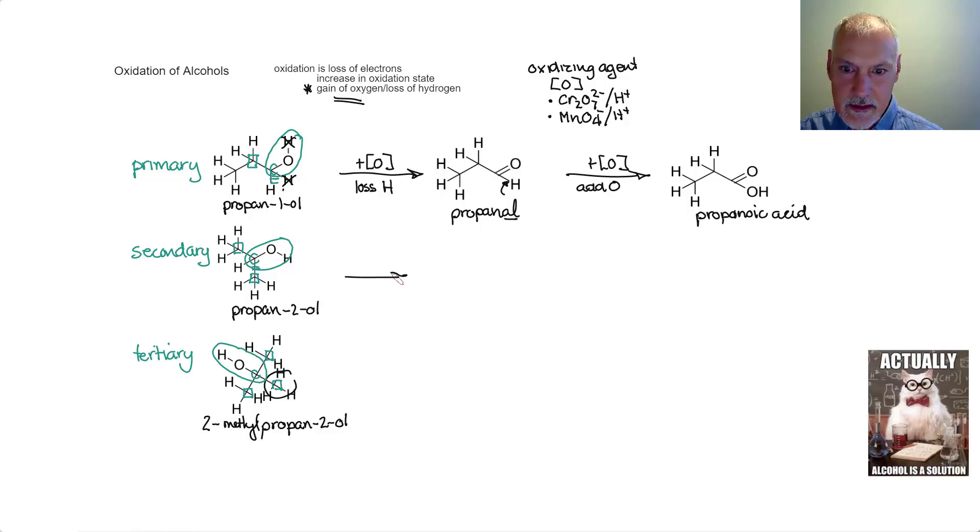Let's look at oxidizing a secondary alcohol. I form this molecule, where my doubly bonded oxygen is in the middle of a chain. This is a ketone, and this one in particular, propanone. Again, to form this molecule, I've lost hydrogen. If I take it and subject it to more oxidizing agent, there is no reaction.